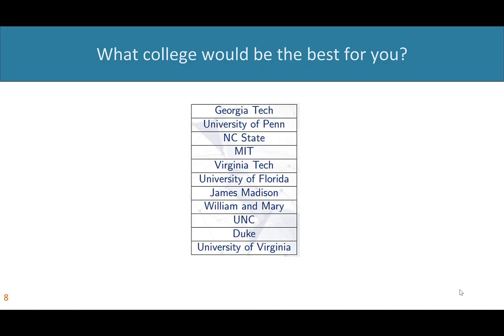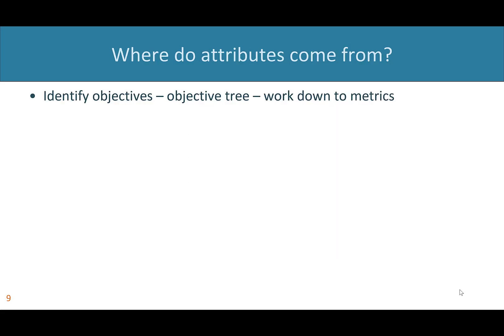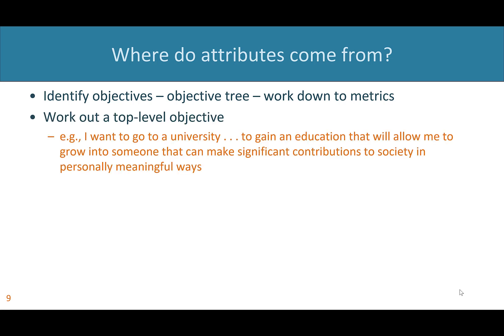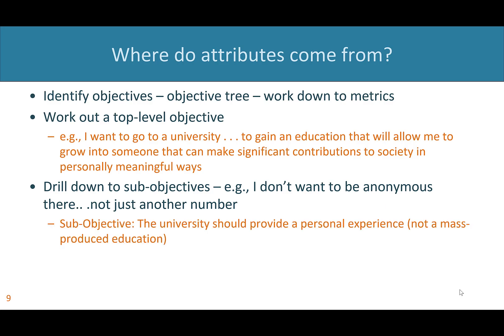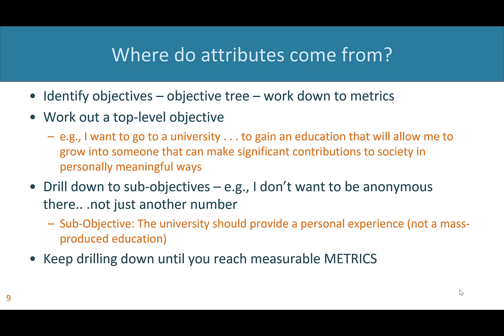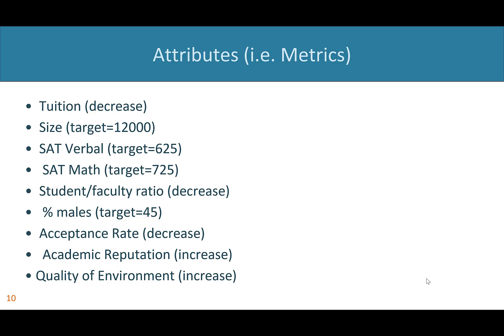So which college would be best for you? Here are the alternatives — a lot of schools on the East Coast in the U.S. and the Southeast. How do we know which attributes to compare them on? We start by thinking about your objectives. You can build an objectives tree and work it all the way down to metrics at the bottom. A top-level objective might be: I want to gain an education that will allow me to grow into someone who can make a significant contribution to society in a personally meaningful way. You drill that down to sub-objectives, and eventually you come down to metrics — the things you'll actually compare different schools on.